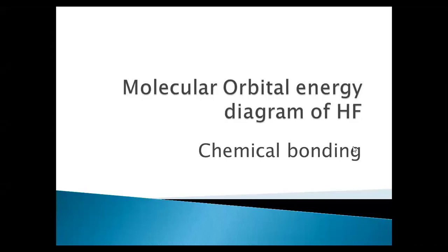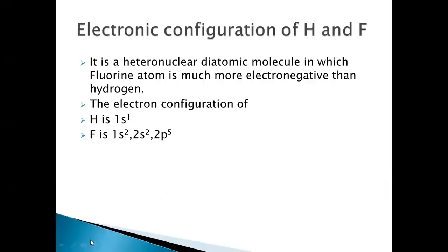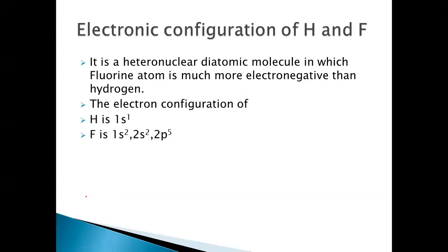In this video, I am going to discuss the molecular orbital energy diagram of hydrogen fluoride, that is HF. If you look at the electronic configuration of hydrogen and fluorine: hydrogen with atomic number 1 has an electronic configuration of 1S1. Fluorine with atomic number 9 has an electronic configuration of 1S2, 2S2, 2P5.